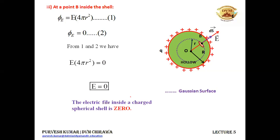No electric field exists inside the shell. Only at the surface is there an electric field — that is the maximum electric field at the surface. When you move away from it, the electric field becomes lesser and lesser.